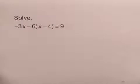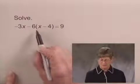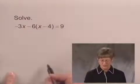We'll solve the equation negative 3x minus 6 times the quantity x minus 4 equals 9. Let's begin by doing the multiplication that appears on the left-hand side of the equation.